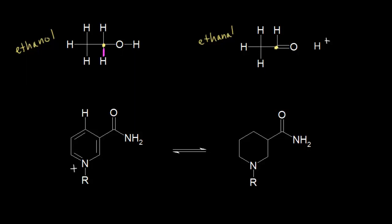If ethanol is oxidized, something else must be reduced. That's how redox reactions work. And what's reduced is NAD+ over here on the left. This is NAD+, which stands for nicotinamide adenine dinucleotide. The adenine is hiding in this R portion, and we have a nitrogenous base ring with an amide functional group for the nicotinamide portion of the molecule. A plus one formal charge on this nitrogen gives us NAD+.